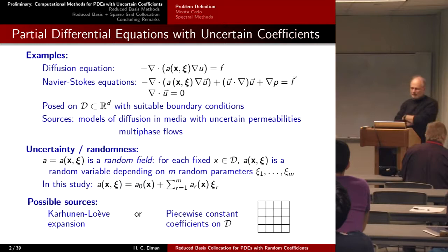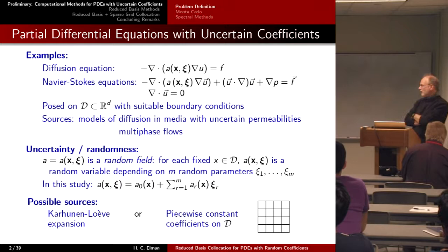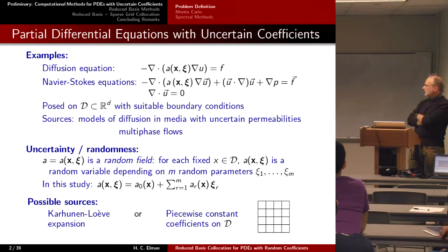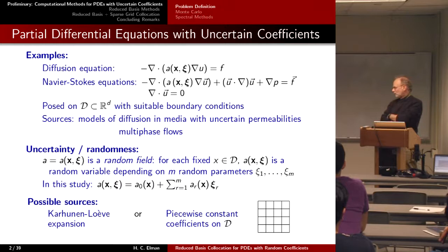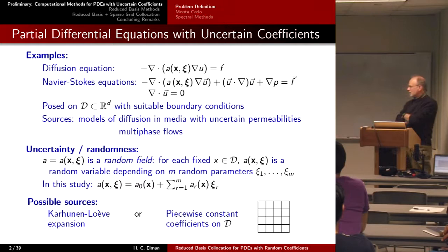Here's a statement of the problem. I have a PDE with uncertain coefficients — for example, the diffusion equation or perhaps the Navier-Stokes equations. In contrast to the traditional classical way of thinking about these problems, we often don't really know what the coefficients are. We don't know what the porosities are, for example, in the model of diffusion. Rather than take it to be constant or some specific function, we'll take it to be a random field, meaning that for each point X in the spatial domain, there's a random variable.